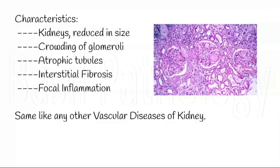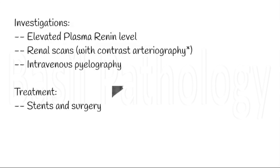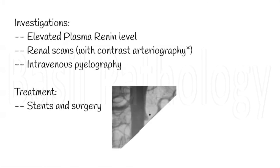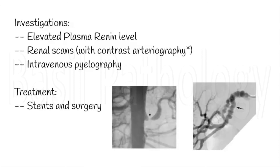There will be elevated plasma renin levels. The renal scans including contrast arteriography and intravenous urography are the gold standard investigations for renal artery stenosis. Surgical removal of the affected area with ligation, anastomosis, or stents are the treatment of choice.